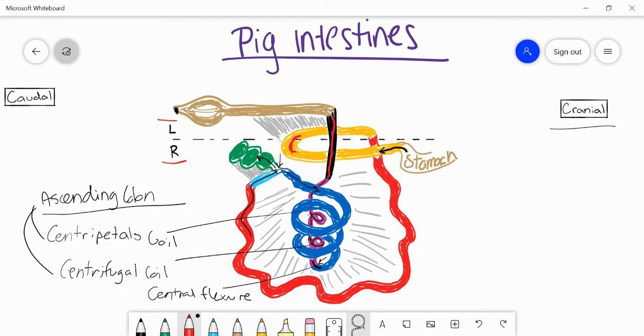So we're crossing the plane as the transverse colon, and then we're going to become the descending colon as we make our way towards the caudal end of the animal.